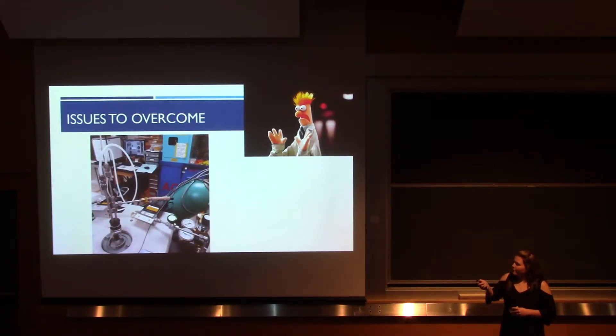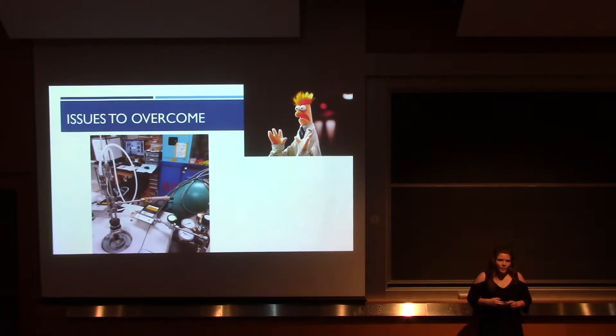So issues to overcome. When adding carbon dioxide to the system, we had an issue with pressurizing the vessel, causing the rubber seal to pop off. So what we needed to do was find a way to clamp the seal onto the vessel. So we used a hose clamp and a metal staple to hold it in place.